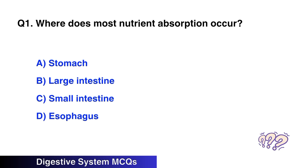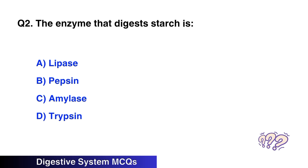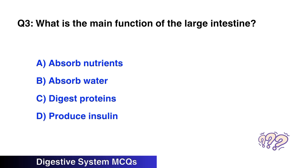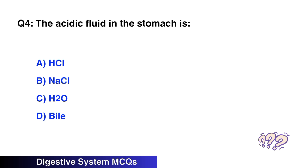Question number one: Where does most nutrient absorption occur? The right option is C, small intestine. Question number two: The enzyme that digests starch is? The right option is C, amylase. Question number three: What is the main function of the large intestine? The right option is B, absorb water.